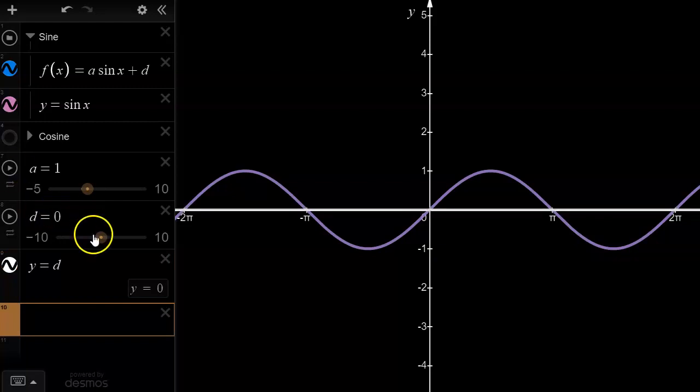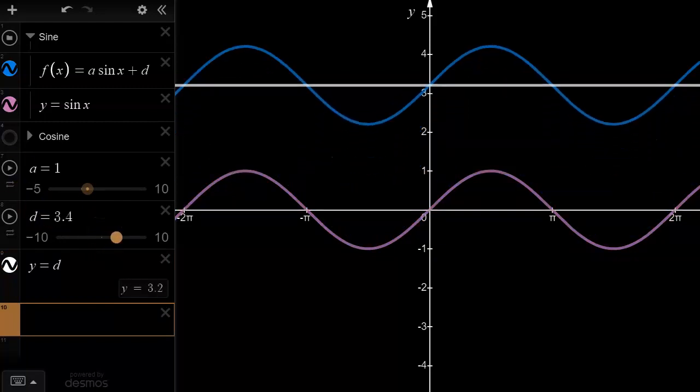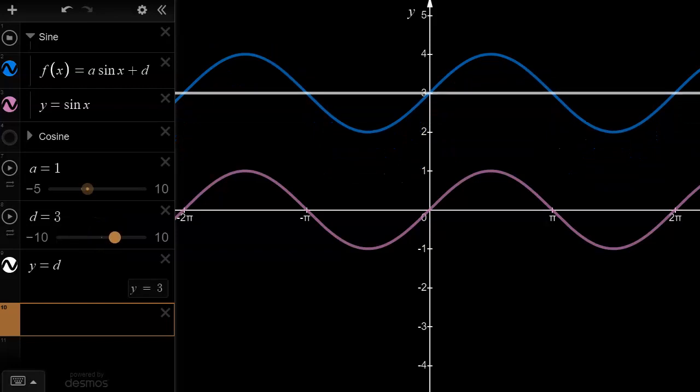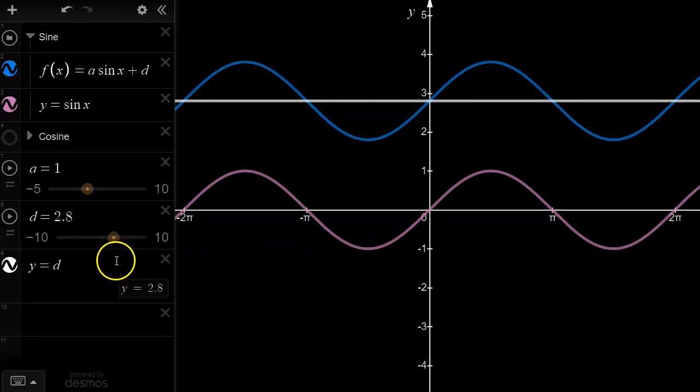Now when I adjust that d value, the median goes with me. So because a vertical translation, or in this case a vertical displacement, translates every point on the curve upwards or downwards, well the median also gets translated that many number of points or units upwards or downwards.